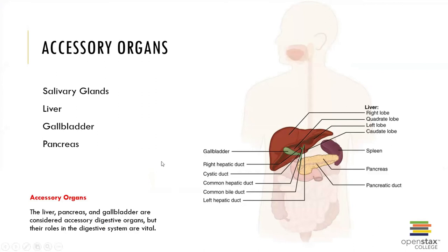Let's start with the liver and the gallbladder. The liver is the largest internal organ in the body and is responsible for the production of bile. The gallbladder is responsible for storing and concentrating bile until it's needed by the small intestine. The salivary glands secrete saliva, and the pancreas secretes pancreatic juice, which contains buffers and enzymes formed by the exocrine cells.